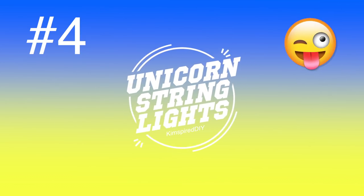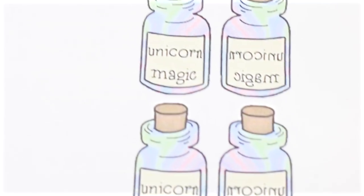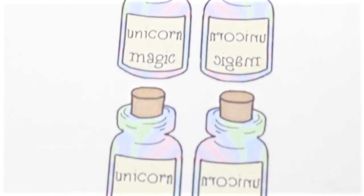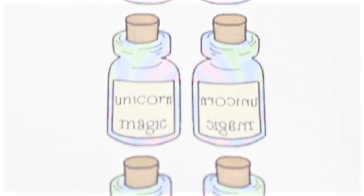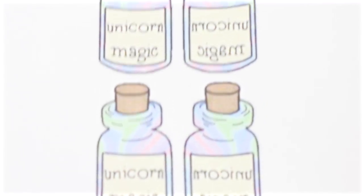The fourth DIY will be unicorn string lights. For this one you will need to print out these images. I actually just got these online and put them into a printable. I will leave a link down below for both of them.